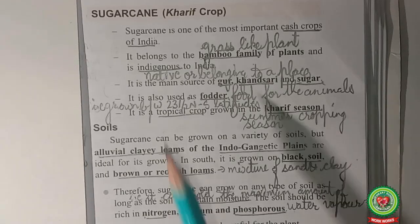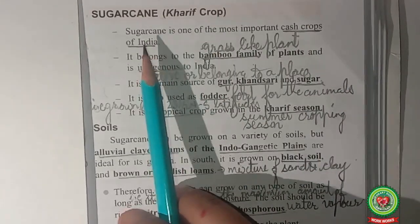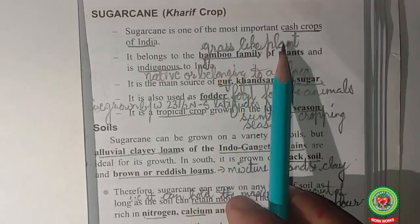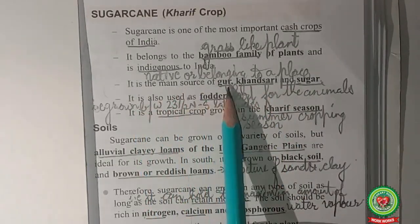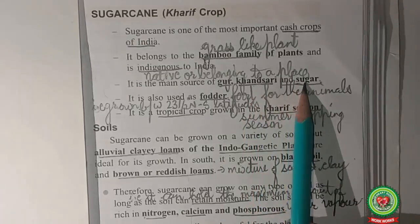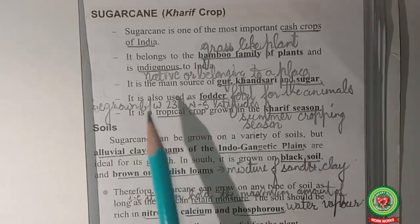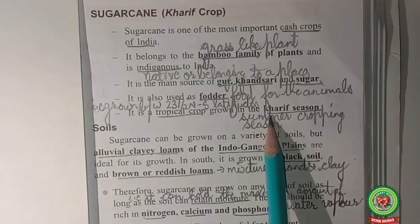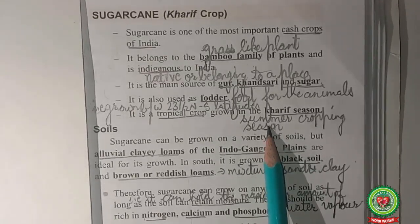Open your book on page number 229. Sugarcane is a kharif crop and one of the most important cash crops of India — grown on a large scale for sale in the market to earn profit. It belongs to the bamboo family, a grass-like plant indigenous to India. It is the main source of gur, khansari (shakkar) and white sugar used in our homes, and is also used as fodder. It is a tropical crop grown between 23.5° north and south latitudes in the kharif season, mainly in March or April, with seeds sown in June on the arrival of rainfall.